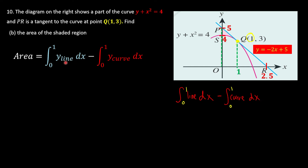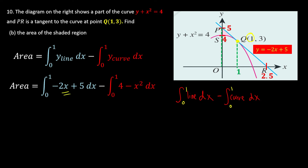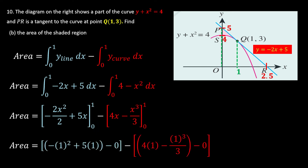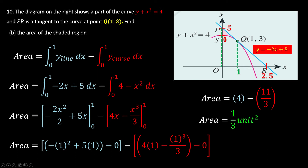The equation of the line is -2x + 5 and the equation of the curve is 4 - x². Integrating with respect to x, we increase the power by 1 and divide by the new power. Taking the upper limit minus the lower limit, we compute and get 4 - 11/3, which gives 1/3 square units. This represents the area bounded between the straight line and the curve.